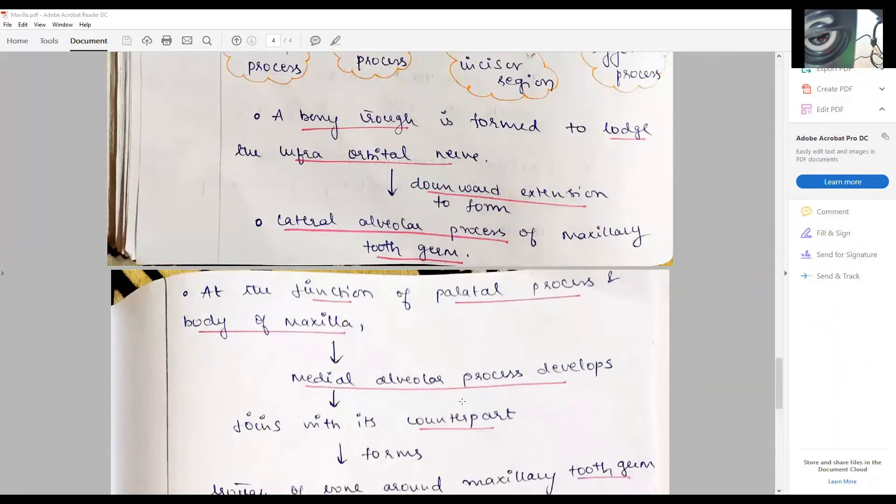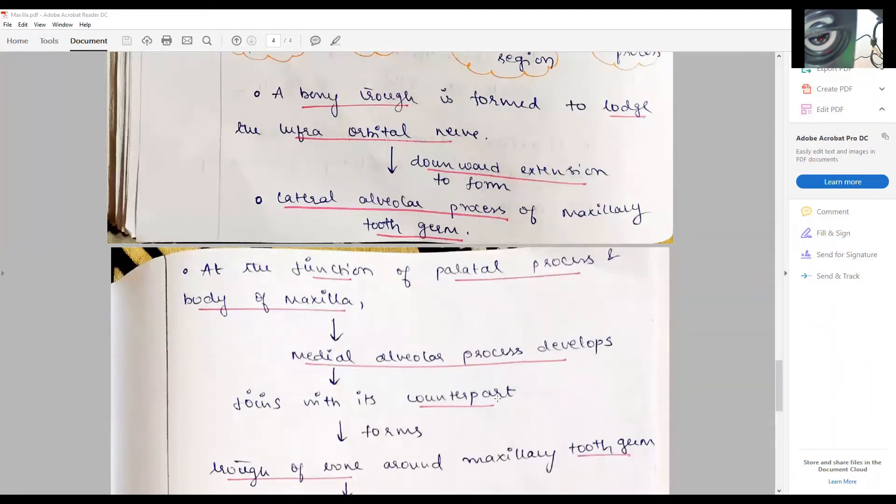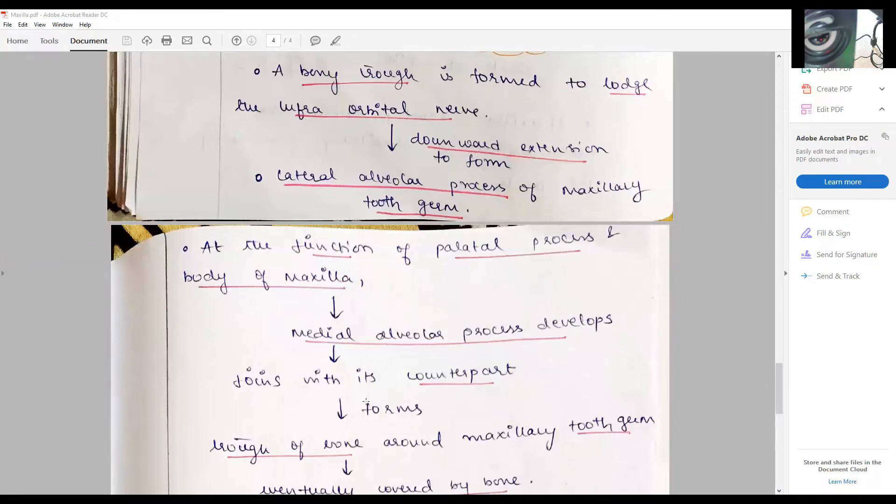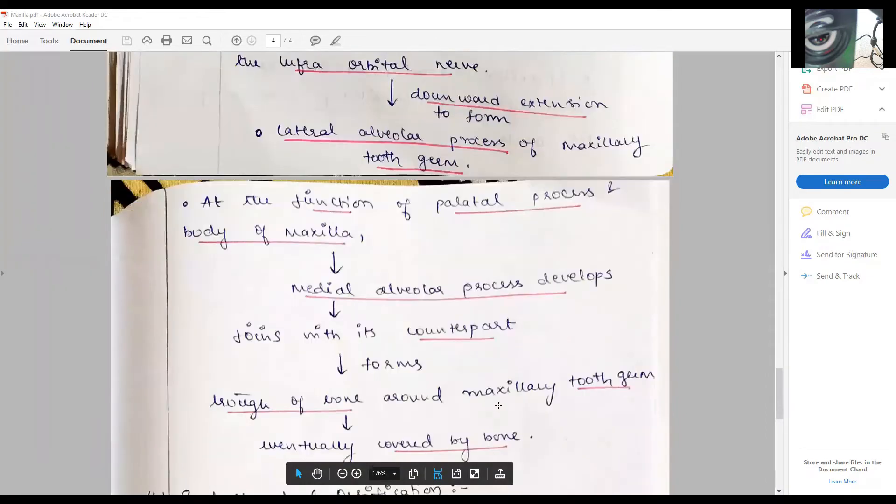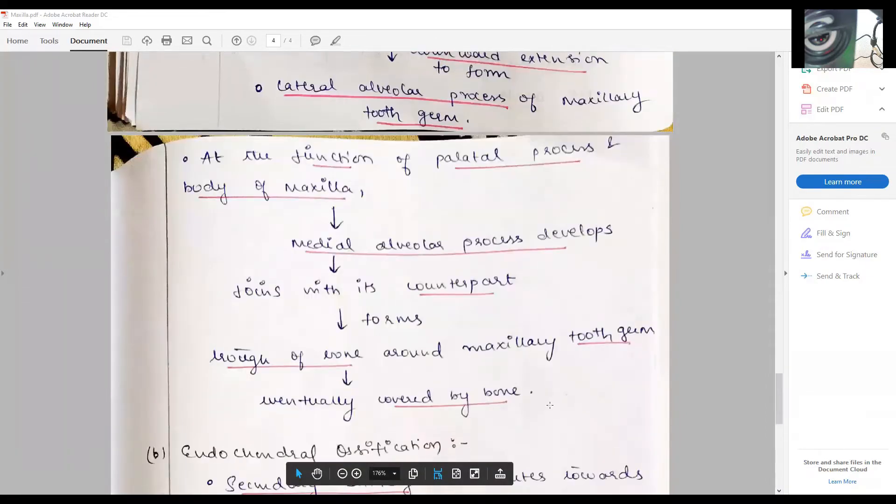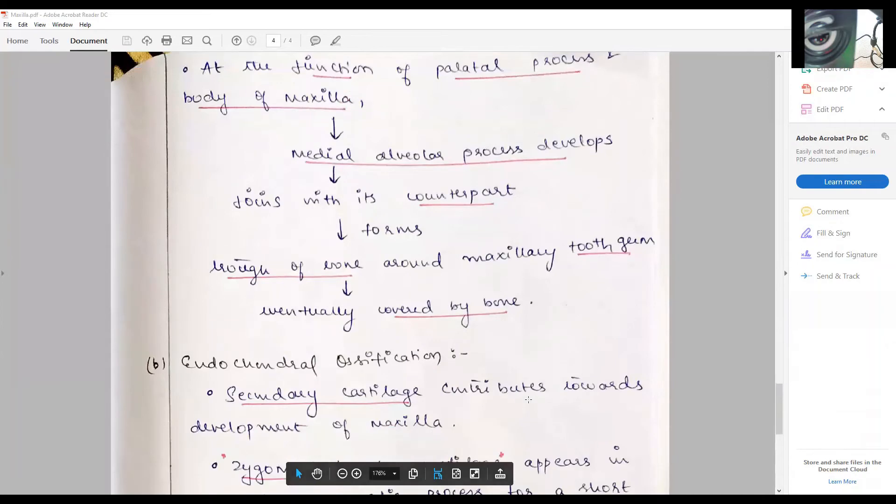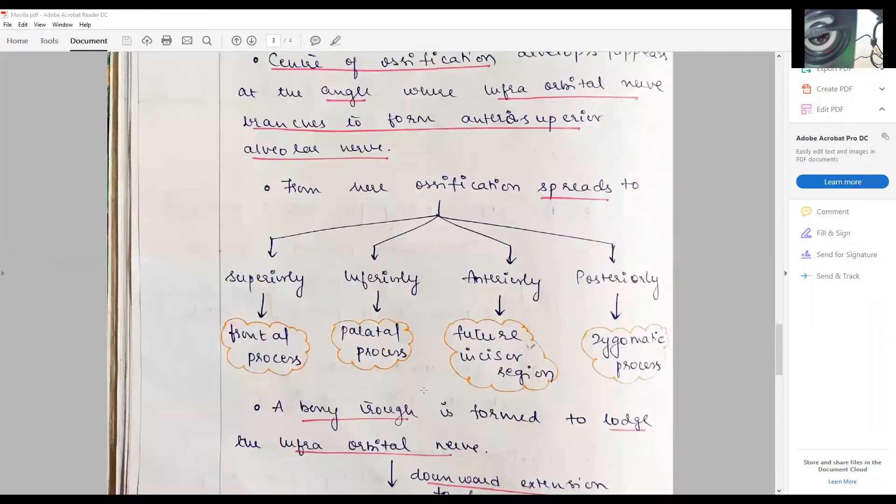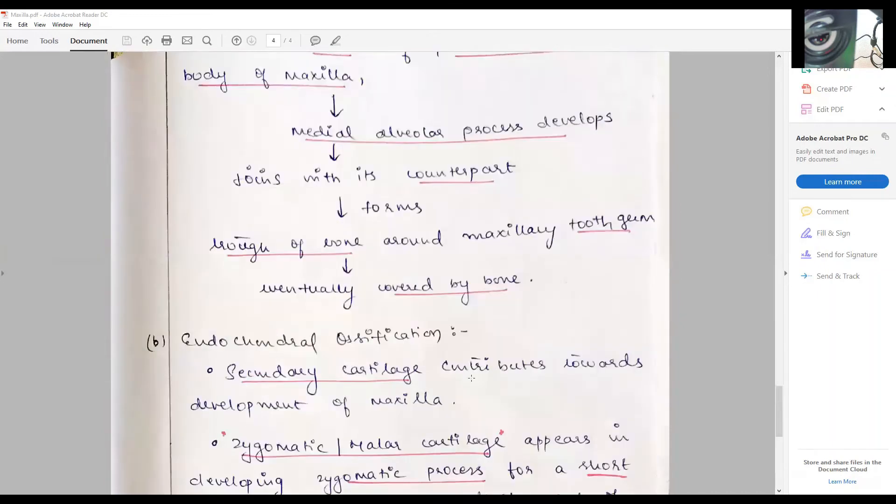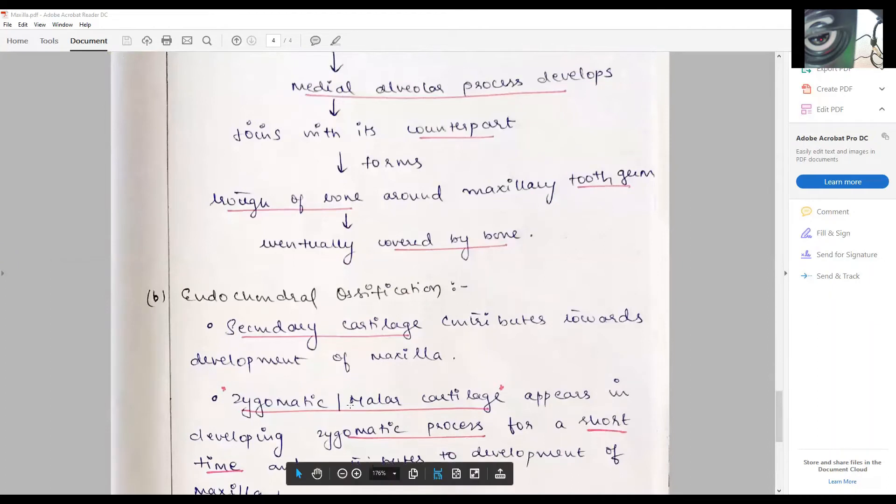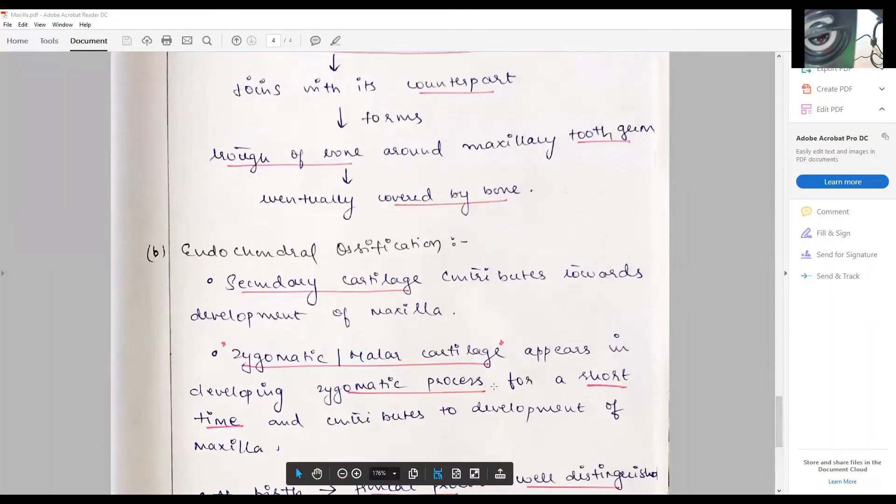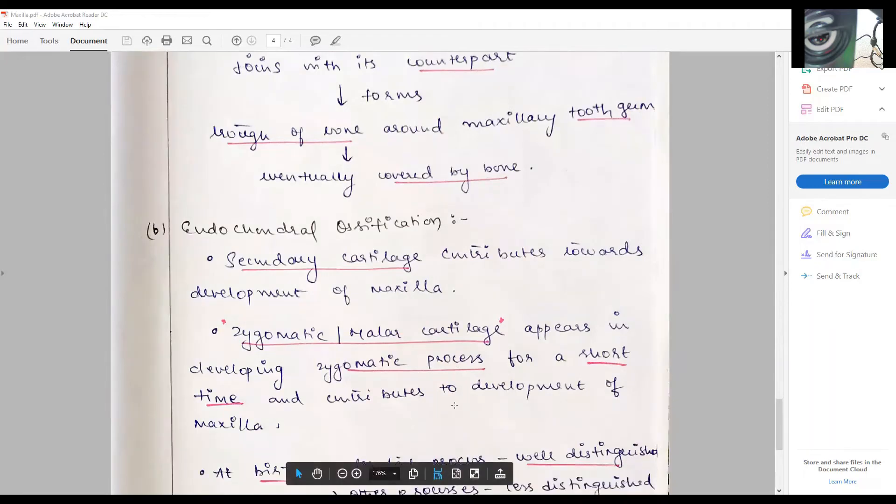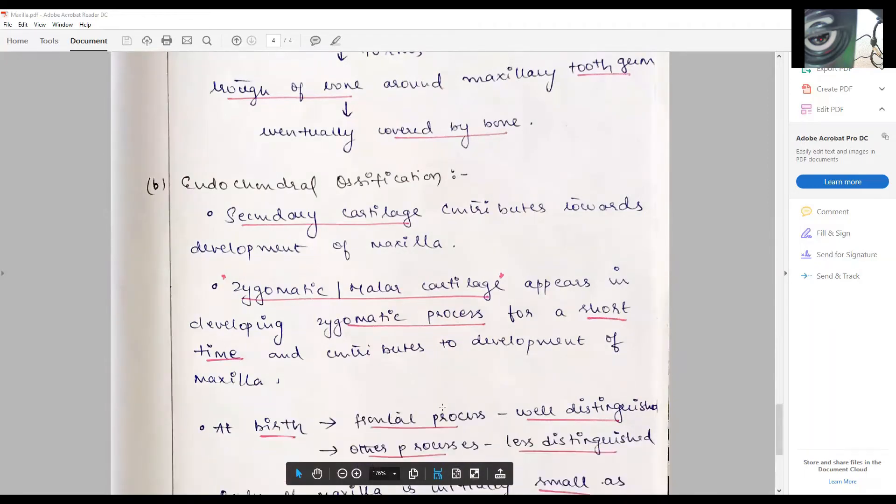That subsequently develops and joins its counterpart of the other side to form or complete the trough of bone around the developing maxillary tooth germs and eventually covered by the bone. The other part, the endochondral ossification, is via the secondary cartilage which contributes to the development of maxilla. Here the cartilage is the zygomatic or malar cartilage that appears in the developing zygomatic process for a short time and contributes in a minimum way.